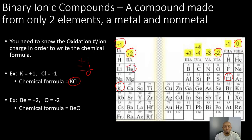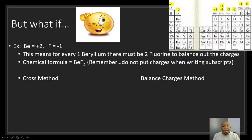Another example is beryllium with a positive 2 charge and oxygen with a negative 2 charge. A positive 2 and a negative 2 cancel each other out to zero, so the formula is BeO, or beryllium oxide when written out. But what if the charges don't cancel each other out to zero?